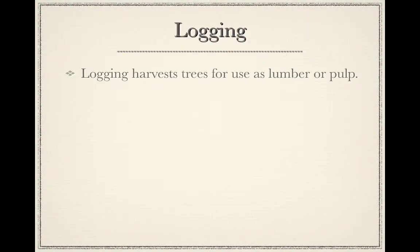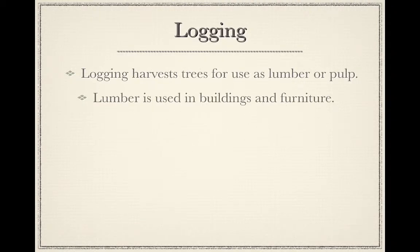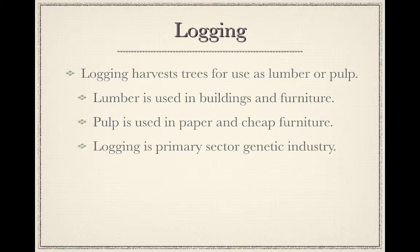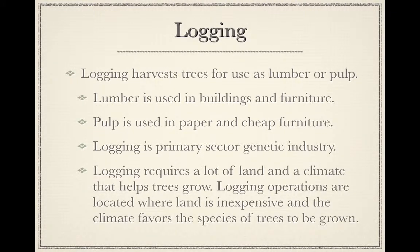Logging harvests trees for use as lumber or pulp — that is, ground-up wood. Lumber is used in buildings and furniture; pulp is used in paper and cheap furniture. Logging is a primary sector genetic industry. Logging requires a lot of land and a climate that helps trees grow. For example, behind my house in Dale County, Alabama there are miles and miles of pine trees that have been planted, farmed, and logged — one of the industries in Dale County, where the land is very inexpensive.